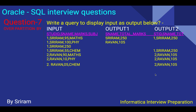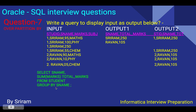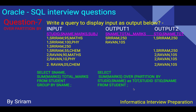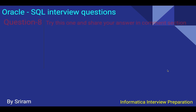Question seven covers OVER PARTITION BY and the difference between GROUP BY and OVER PARTITION BY. Two outputs are shown: Output 1 uses GROUP BY — SELECT s_name, SUM(marks) AS total_marks FROM student GROUP BY s_name. Output 2 uses OVER PARTITION BY — SELECT SUM(marks) OVER (PARTITION BY student_name) AS total, student_id, s_name FROM student. The key difference: GROUP BY reduces the number of rows, whereas PARTITION BY does not reduce the number of rows.